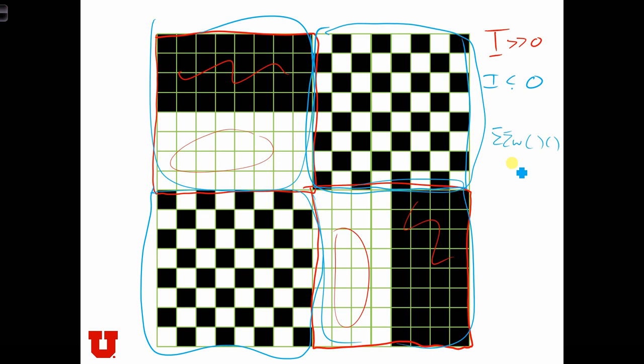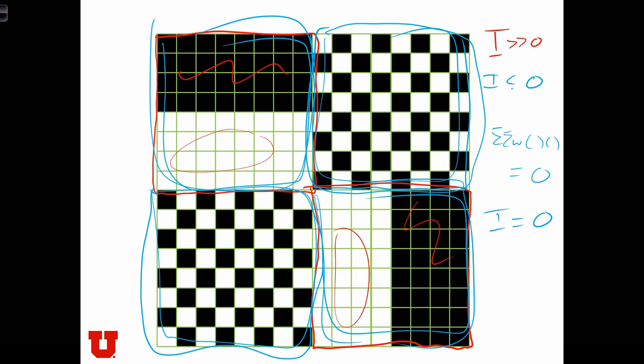So these positive cross product terms are going to counteract these negative cross product terms. And Moran's I for this map will equal something close to zero.